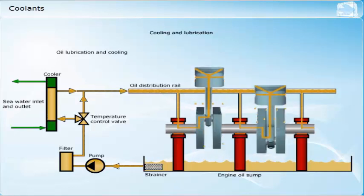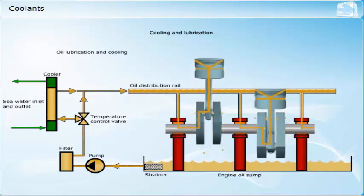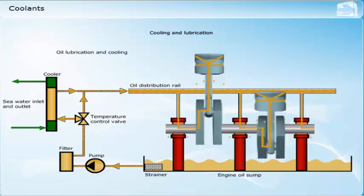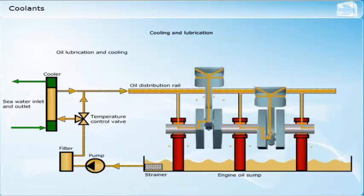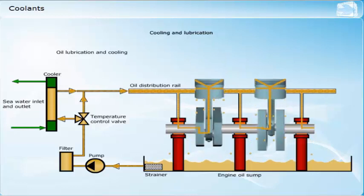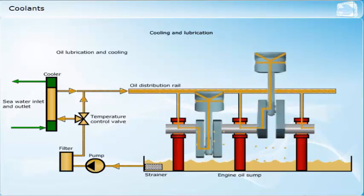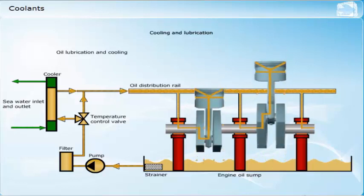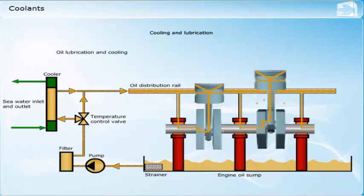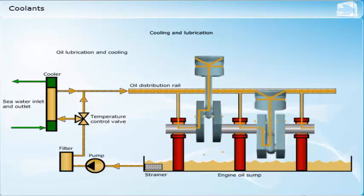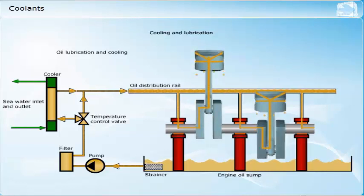In small engines, the hot oil transfers heat to the atmosphere through finned coils or through the surface of the oil pan. In larger engines, it is necessary to circulate the oil through external heat exchangers, where the heat is transferred to a secondary coolant.